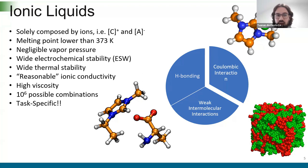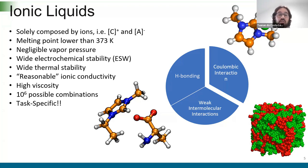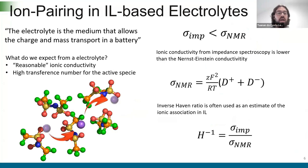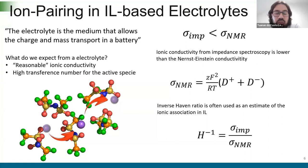Why do ionic liquids have such nice features? It's because of the rich chemistry of the systems — hydrogen bonds, weak intermolecular interactions that can lead to the formation of nanodomain structures and microheterogeneity, and of course Coulomb interactions. And why do we talk so much about ion pairing in ionic liquid-based electrolytes? When we talk about electrolytes, the first things that come to mind are ionic conductivity and transference numbers.